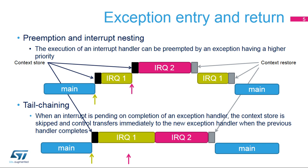When there is an interrupt request with low priority raised during execution of an interrupt handler, it becomes pending. Once the current interrupt handler is finished, the context saving and restoring process is skipped, and control is transferred directly to the new exception handler to decrease interrupt latency.